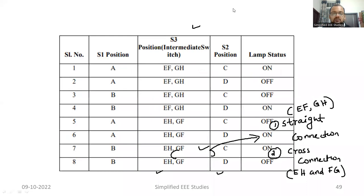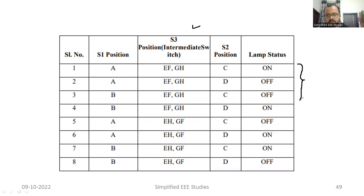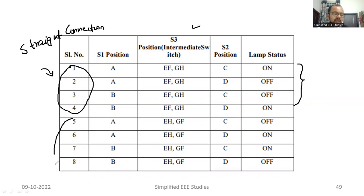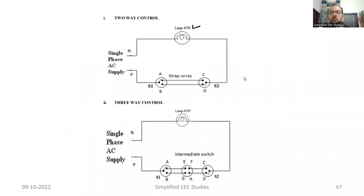There is a truth table. We can verify the truth table. You can operate the switches using this truth table. It is quite simple. As already mentioned, there are two connections — straight connection and cross connection. The first four points represent the straight connection. This type of three-way control of lamp is suitable where a long corridor is available.